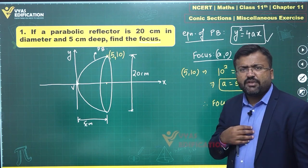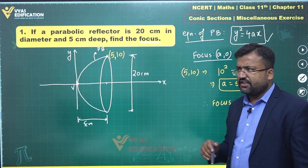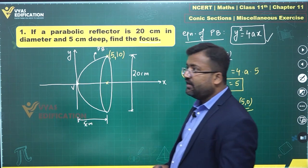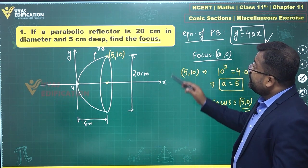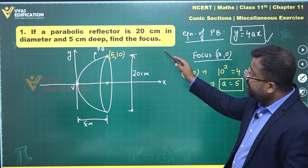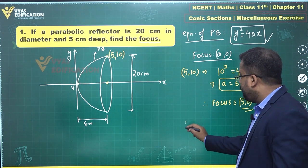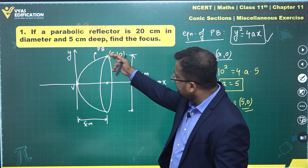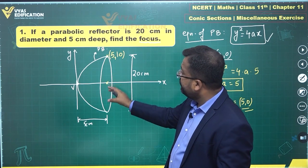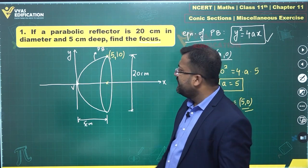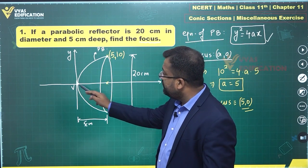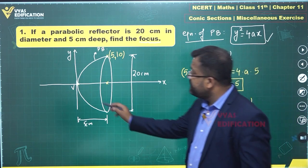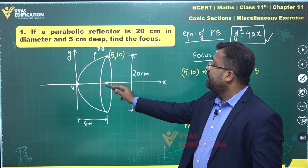But coordinate axis have been introduced by us. They were not given initially. So, what we will have is focus at (5, 0) implies focus at this particular point. 20 centimeter diameter and 5 centimeter deep, find the focus. Focus actually lies at the center of this diameter basically or you can say that at 5 centimeter from this vertex at here, at a distance of 5 centimeter from this particular point over here.